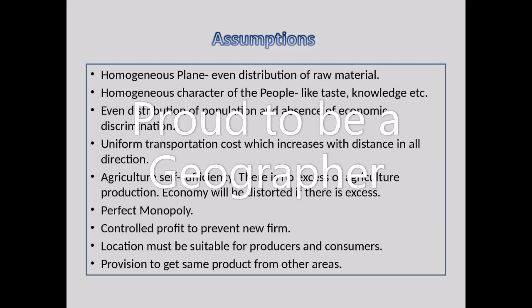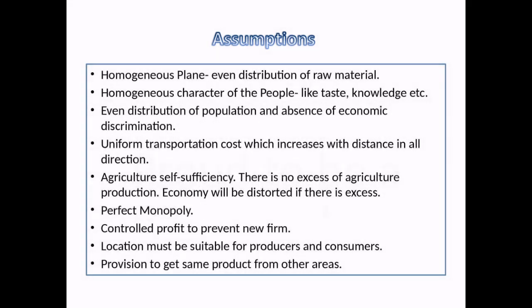Now we can understand what are the assumptions made by Losch in establishing this theory. He assumes that there should be a homogeneous plane with even distribution of raw material, and the character of the people should also be homogeneous — meaning they have the same taste, knowledge, etc. The population should be evenly distributed along the homogeneous plane, and there should be an absence of economic discrimination, meaning everyone should have the same economic condition.